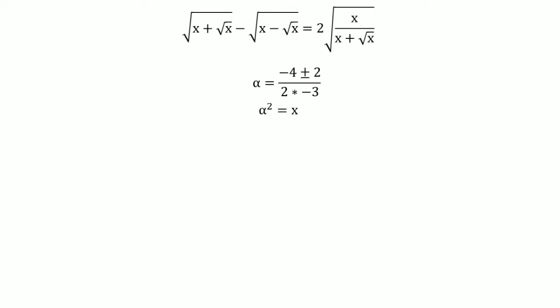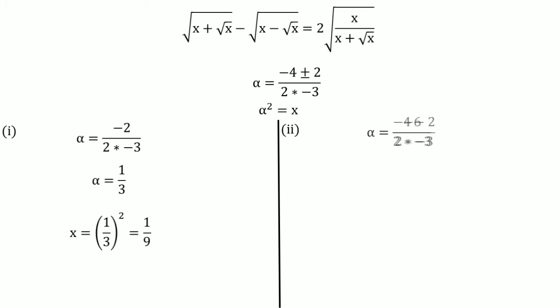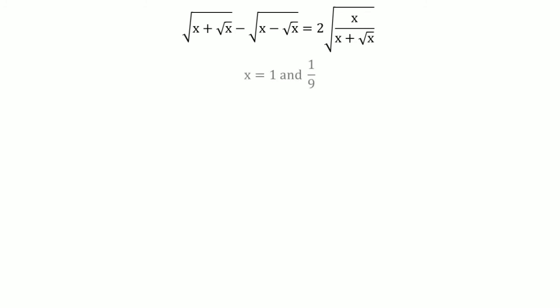In the first case, α = (−4 + 2) / (2 × −3) = 1/3, so x = α² = 1/9. In the second case, α = (−4 − 2) / (2 × −3) = 1, so x = α² = 1. We now have two candidate values of x: 1 and 1/9.